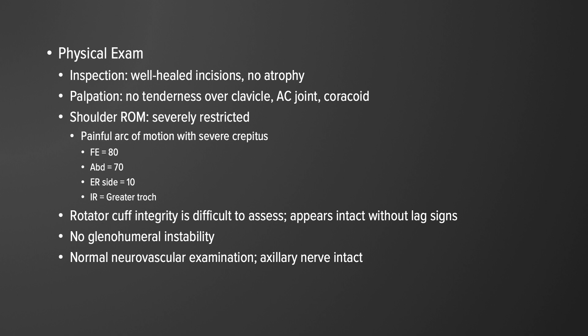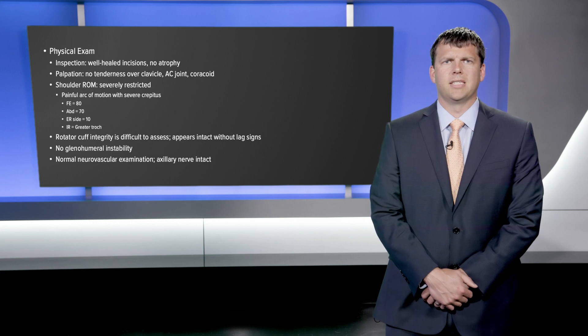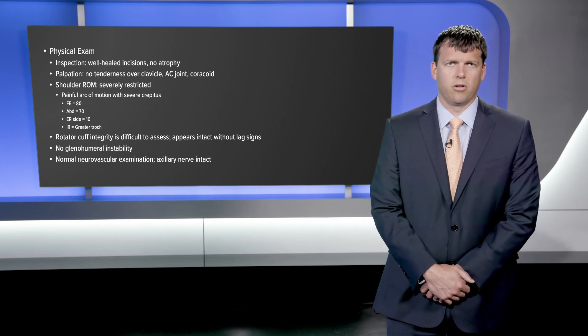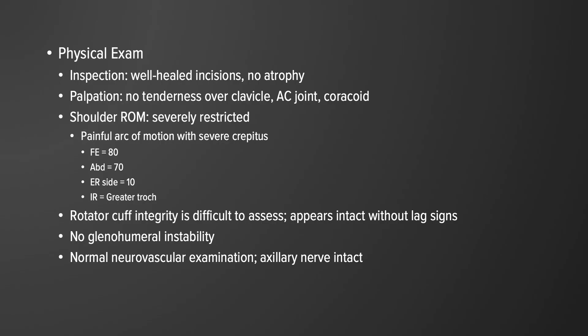His forward elevation actively was only 80 degrees, his abduction only 70 degrees actively, his external rotation at the side was only 10 degrees, and his internal rotation was also severely restricted as he could not get past his greater trochanter. His rotator cuff integrity was difficult to assess clinically but appeared functionally intact with no lag signs present.